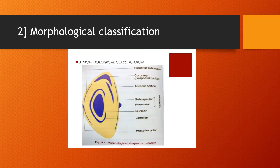Coming to the morphological classification, this classification is based on the type of opacity developing inside the cataract. It can be either nuclear cataract or cortical cataract. Surrounding the nucleus, there is lamellar cataract, then anterior subcapsular cataract or posterior subcapsular cataract, coronary cataract, and pyramidal cataract.